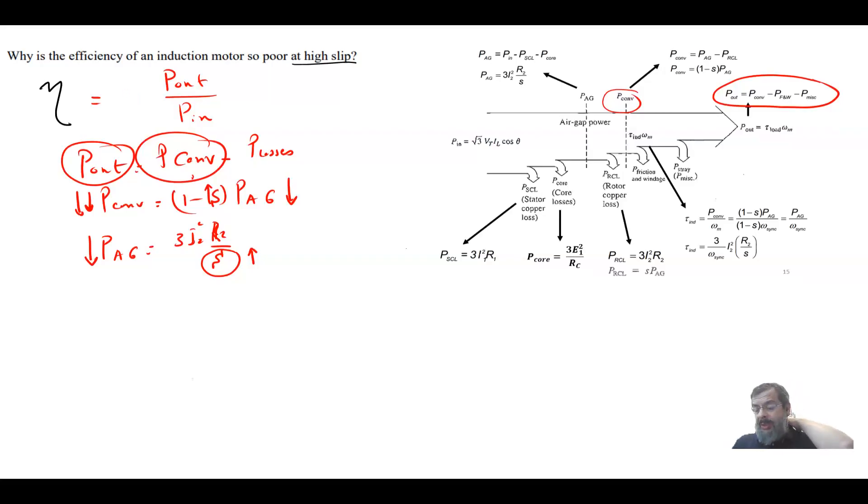This is why the efficiency of the motor when running at high slip will become very, very small.